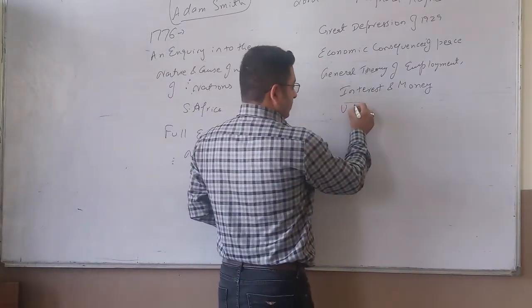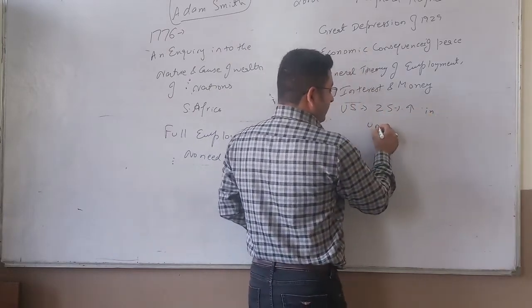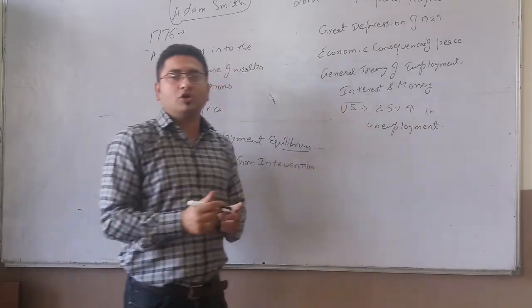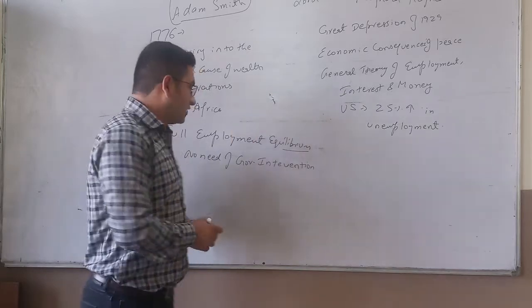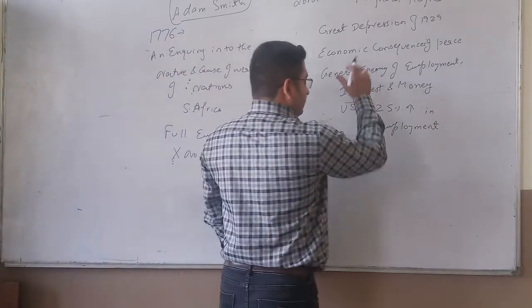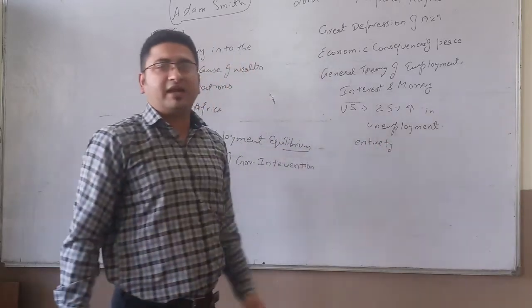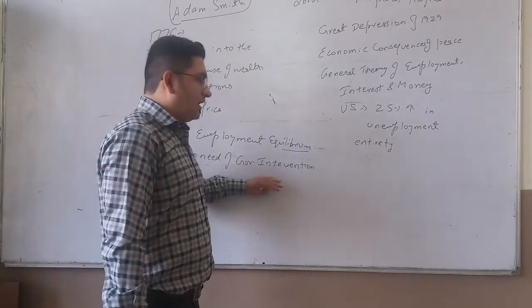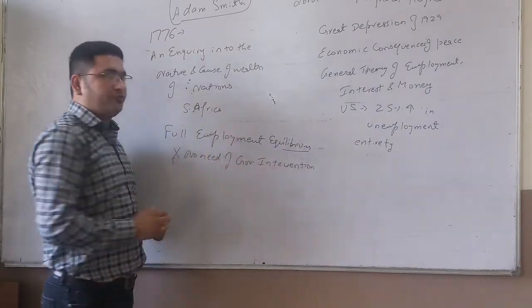So, in this great depression, in U.S., there was 25% increase in unemployment rate, which was too huge. Then he observed that Adam Smith said that there is no need of government intervention, but he said that we need to study an economy in its entirety. It means economy as a whole, and a country will not always operate at full employment equilibrium.